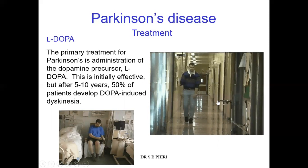The enzyme that converts L-DOPA into dopamine is called DOPA decarboxylase. So when you give a patient L-DOPA, this enzyme converts it into dopamine, which will then have the same effect on D1 and D2 receptors as we have already explained.